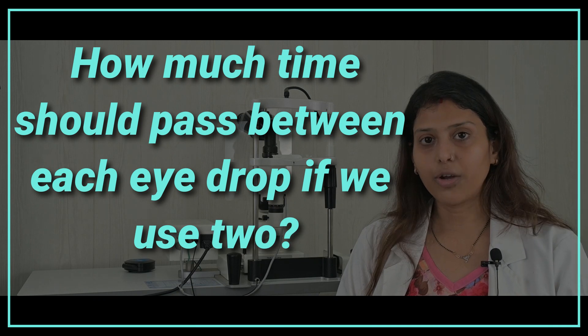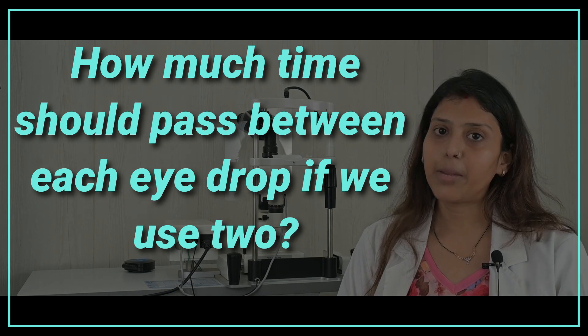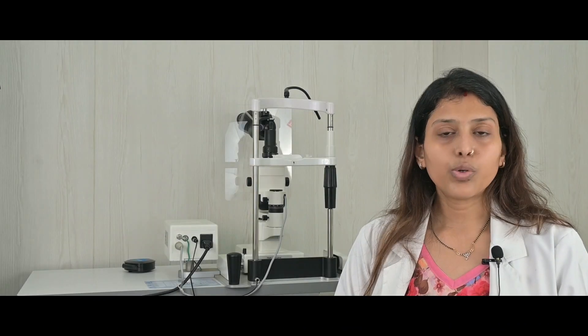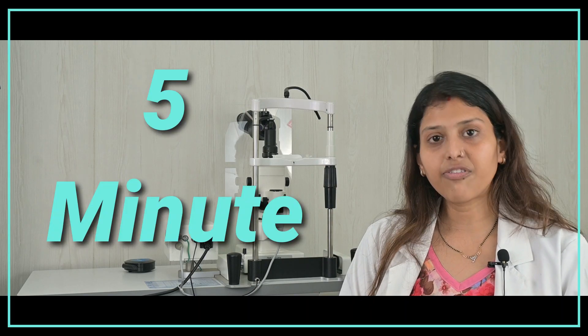If we are using two eye drops, then how much should be the time in between the two eye drops? So firstly, the time should be at least five minutes in between the two eye drops. While we put the other one, the first one, it gets flushed out.